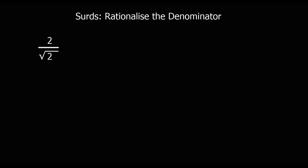When a question says 'rationalize the denominator', it's asking us to — the denominator is the bottom number — rationalize means get rid of the surd, because surds are irrational numbers. We need to get rid of the surd from the bottom. That's what rationalize the denominator means.